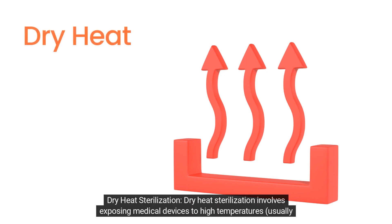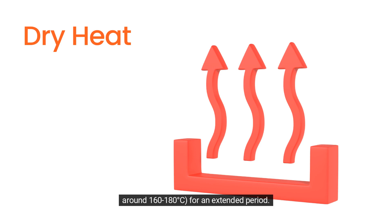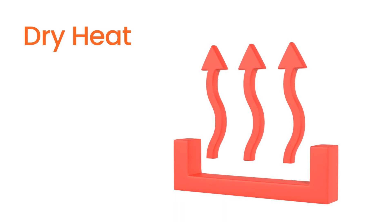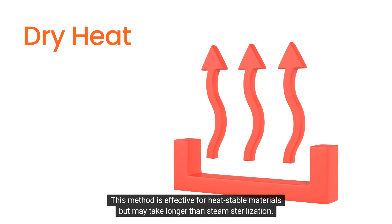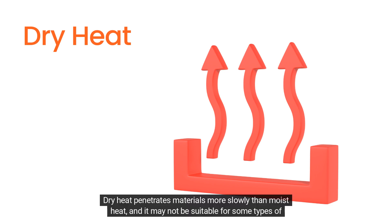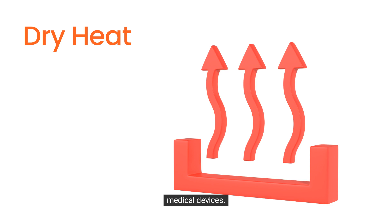Dry heat sterilization involves exposing medical devices to high temperatures, usually around 160 to 180 degrees Celsius, for an extended period. This method is effective for heat-stable materials but may take longer than steam sterilization. Dry heat penetrates materials more slowly than moist heat, and it may not be suitable for some types of medical devices.